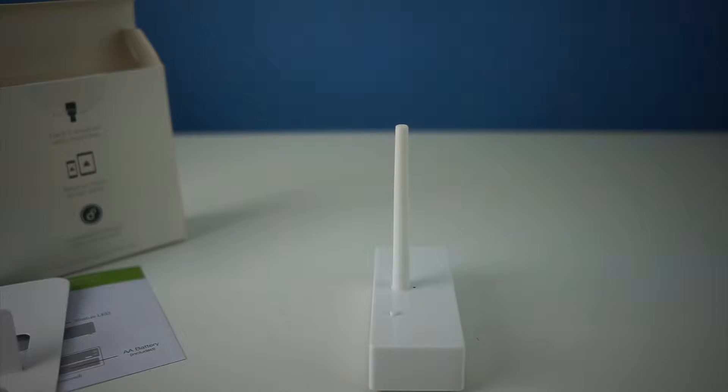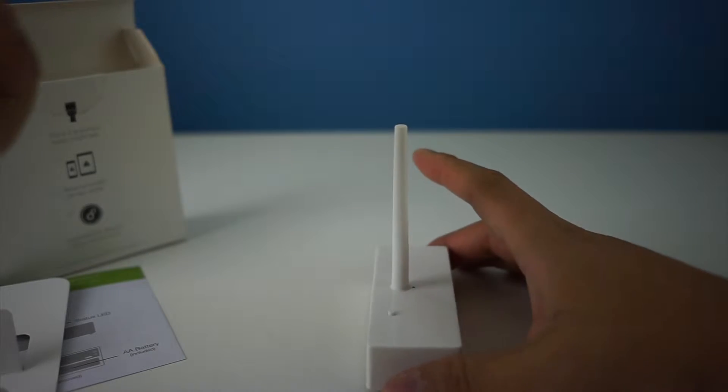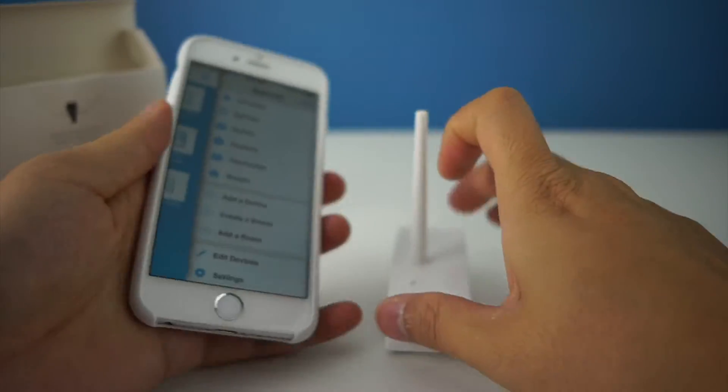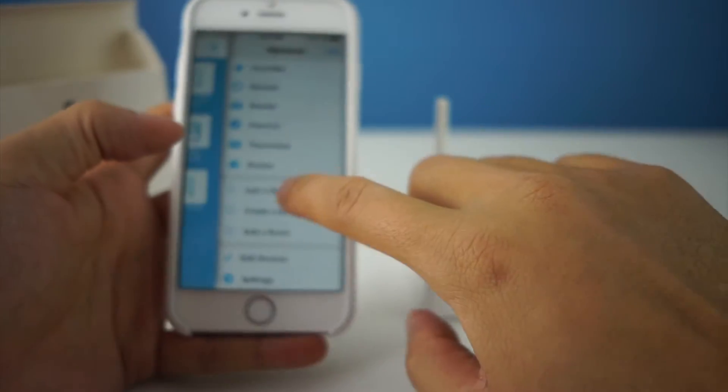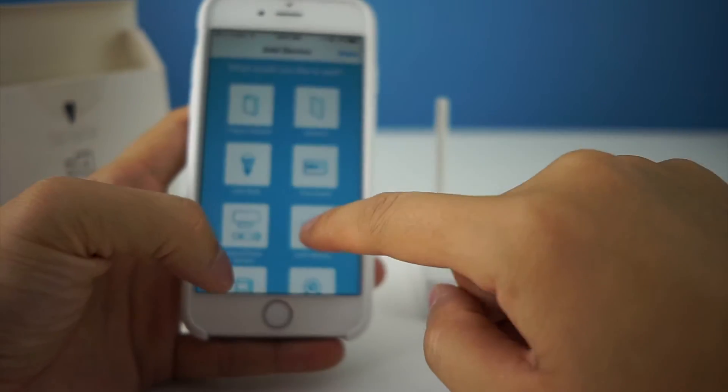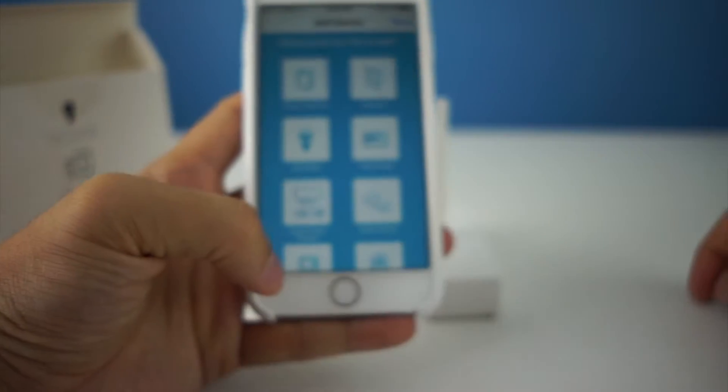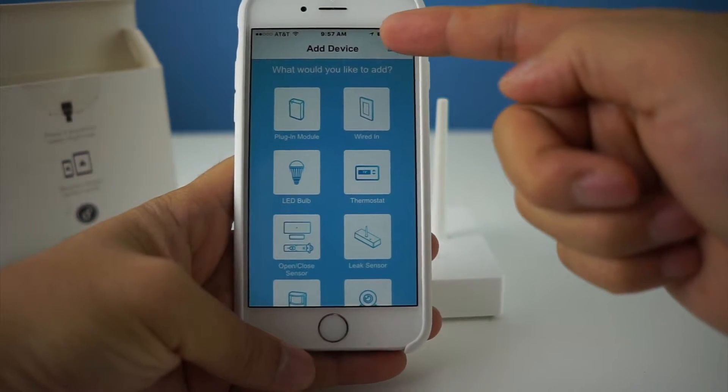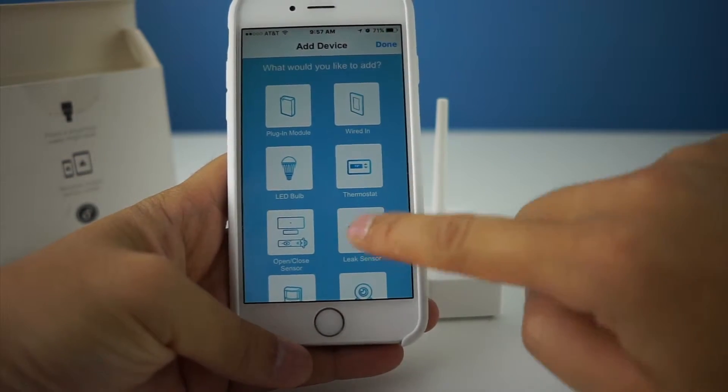I have an Insteon hub. I also have the ISY, but the Insteon hub seems to be the simplest. You go to add a device and then you choose leak sensor.